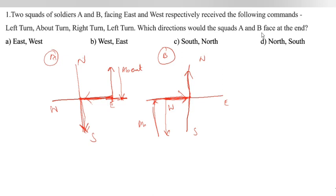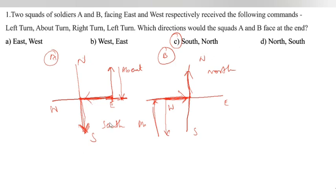In which direction would squad A and B face at the end? Squad A faces South, and squad B faces North. So south and north is the answer. They ask A and B, so A is south side and B is north side. This is the final answer.